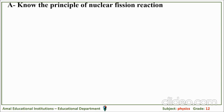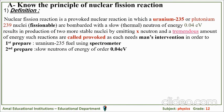Let's know the principle of nuclear fission reaction. As a definition, nuclear fission reaction is a provoked nuclear reaction in which uranium-235 or plutonium-239 nuclei, which we call fissionable, are bombarded with slow or thermal neutrons of energy 0.04 electron volts, so they can undergo fission reaction.